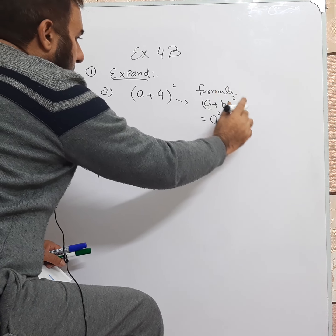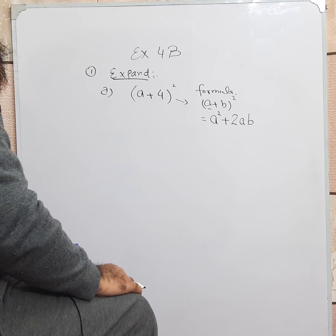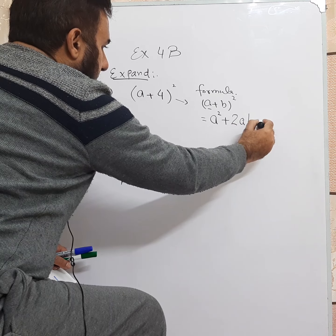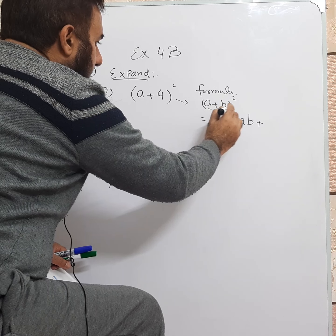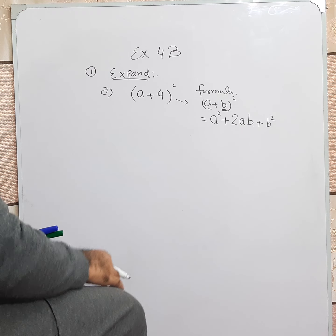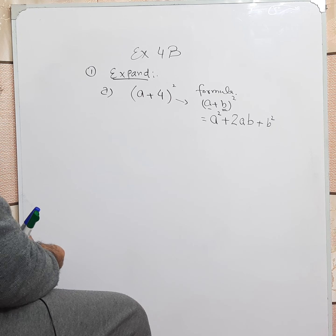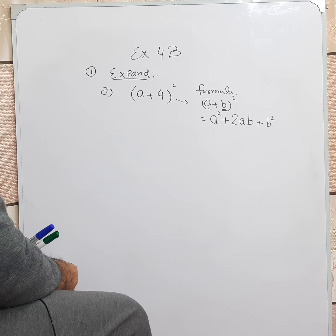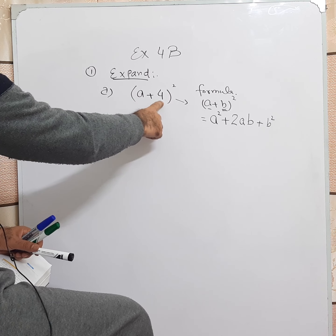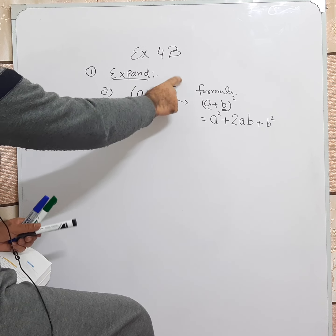A squared plus — we write 2 here — then we write the first term, then the second term: 2AB. These are being multiplied: 2 into A into B. And plus the square of the second term, B squared. So A squared plus 2AB plus B squared.